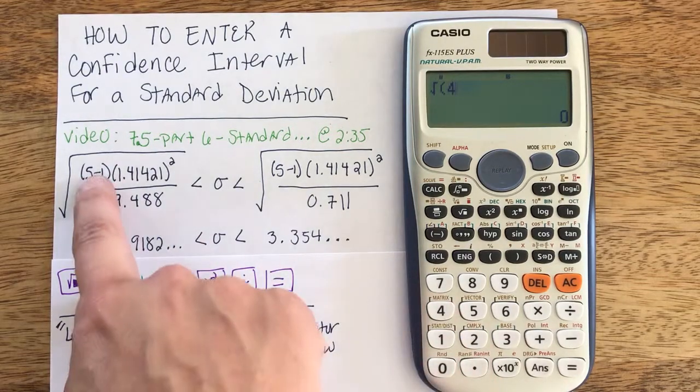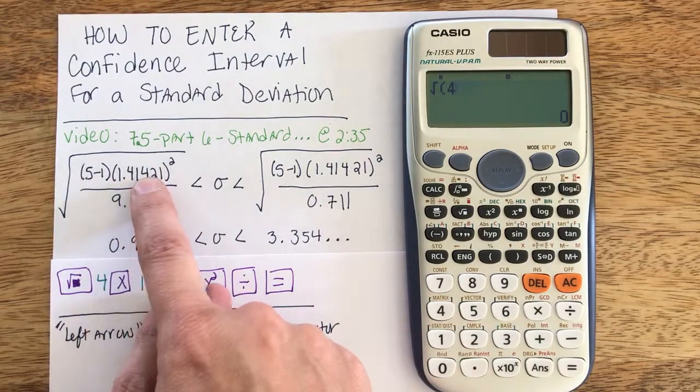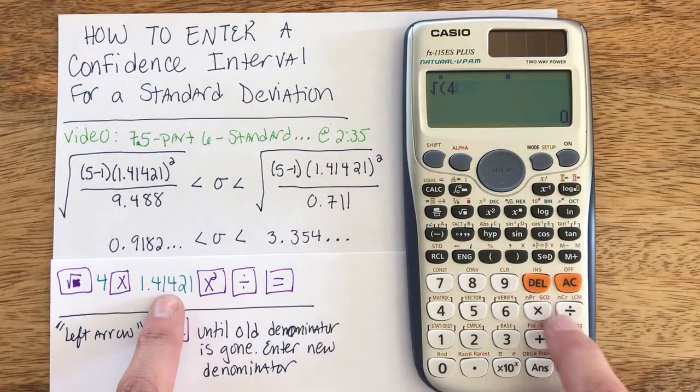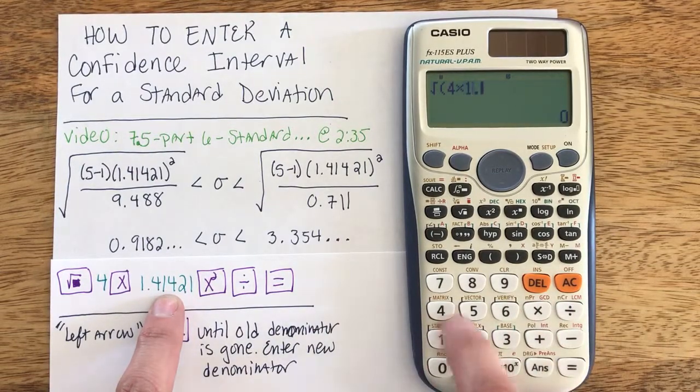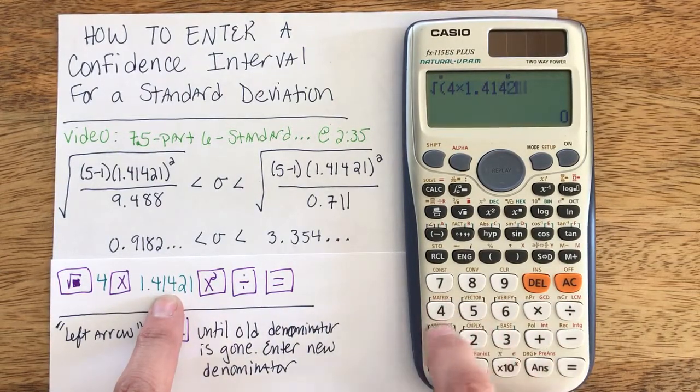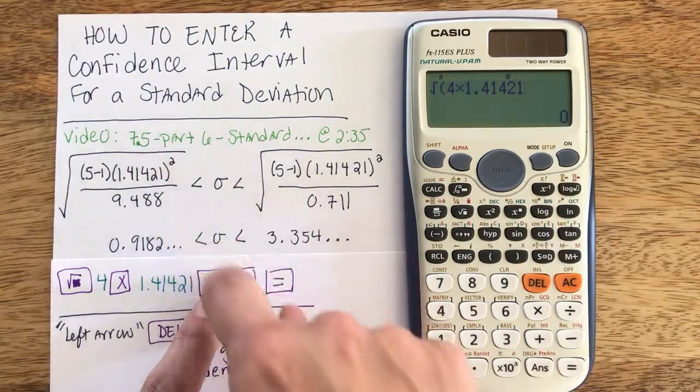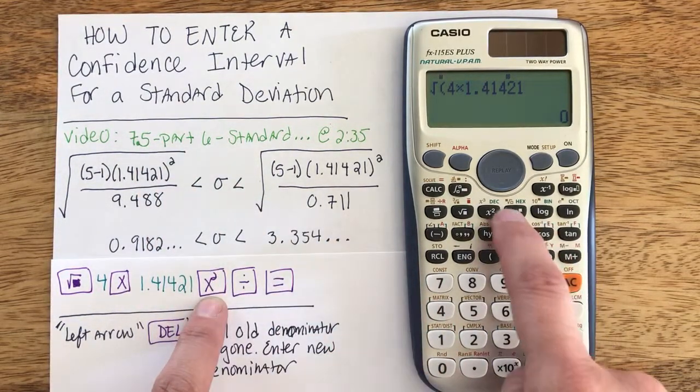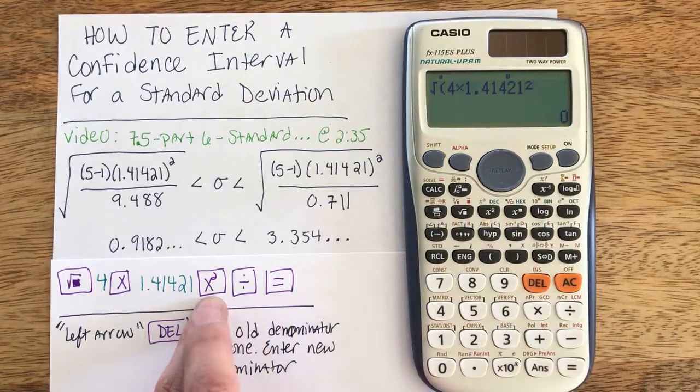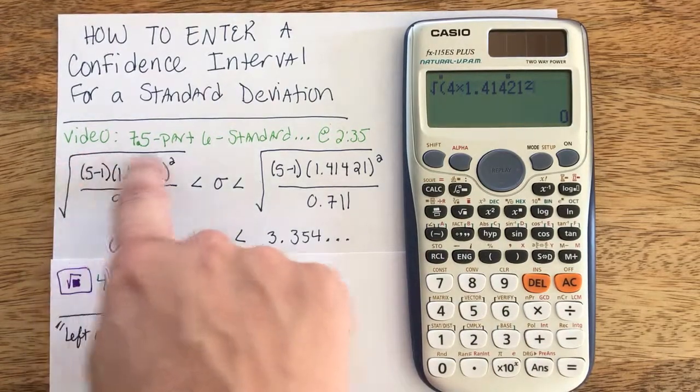And I'll start with 4 times s, my sample standard deviation, so times my 1.41421. Do not forget to square s, your sample standard deviation. That's the most common mistake I see.